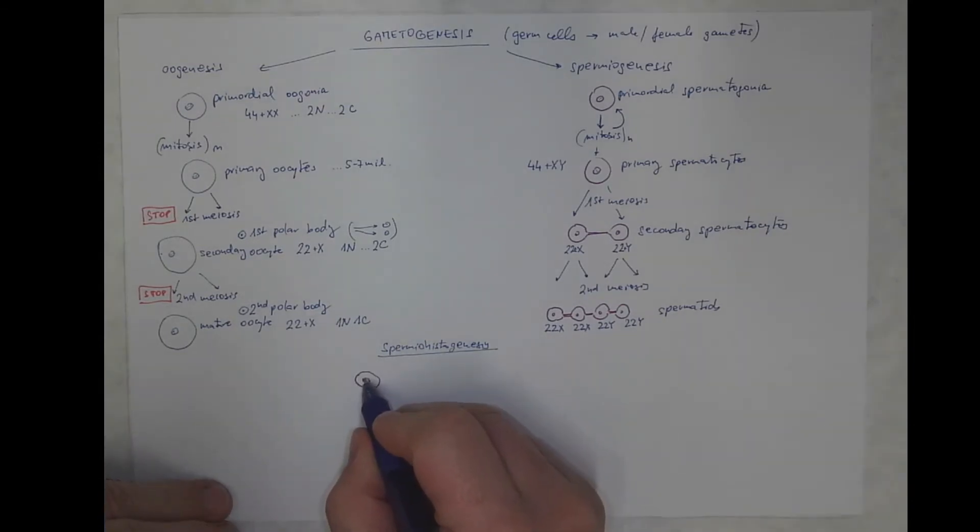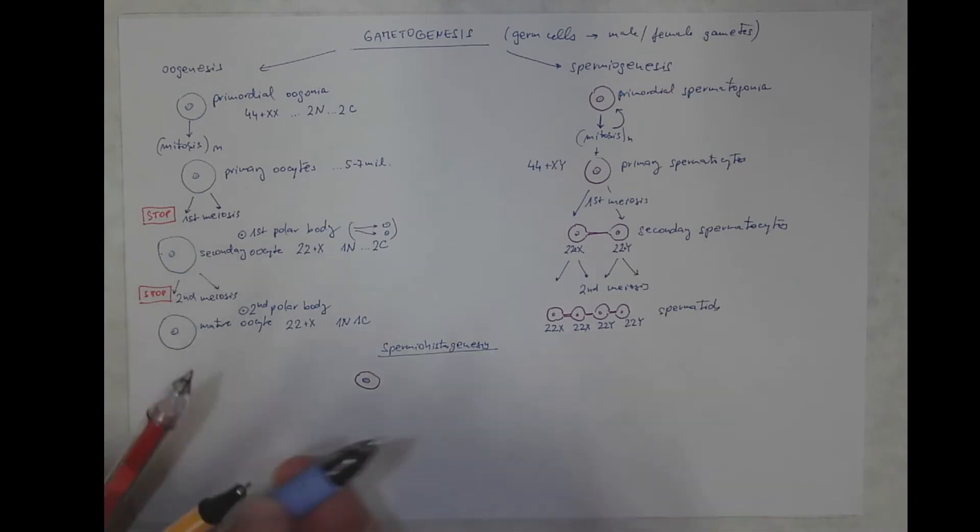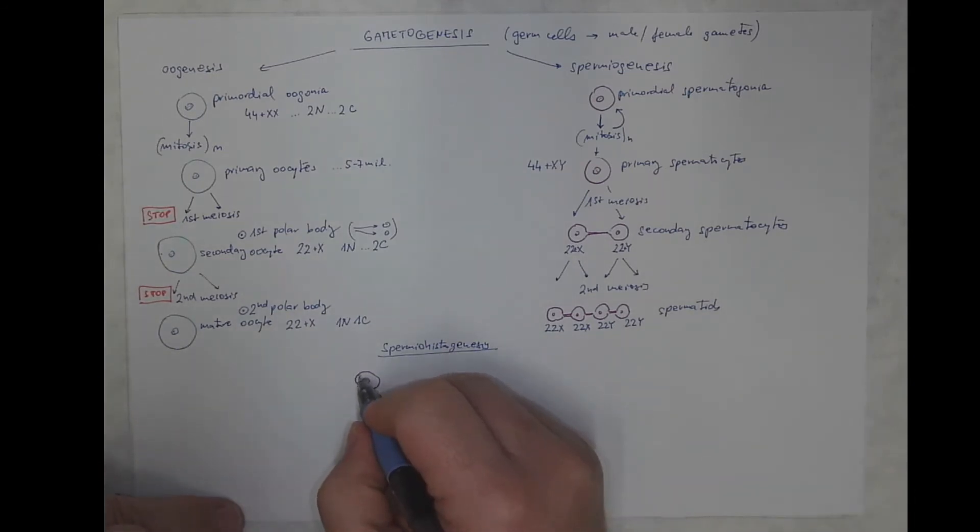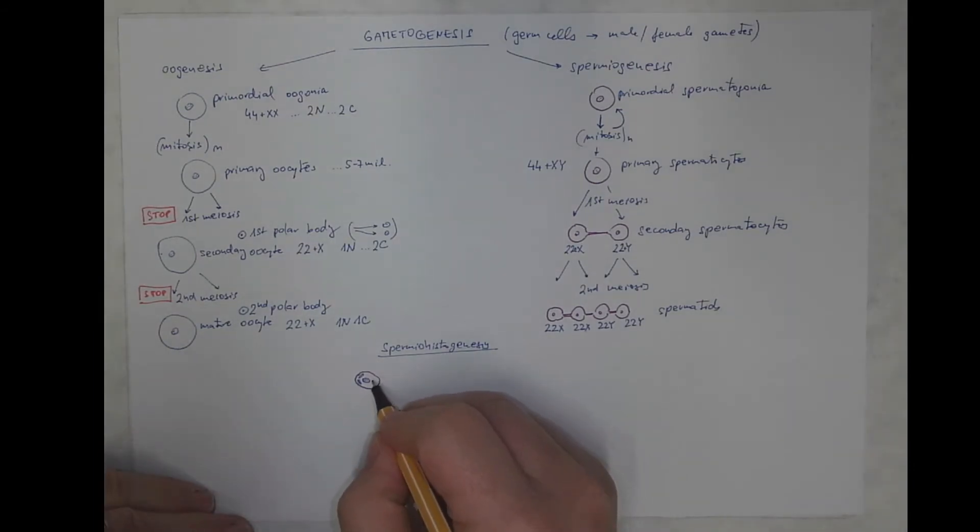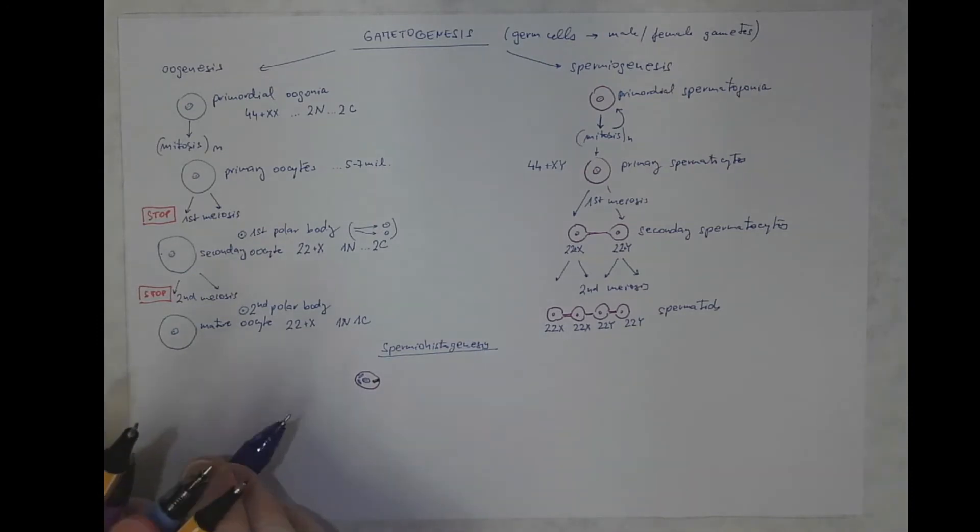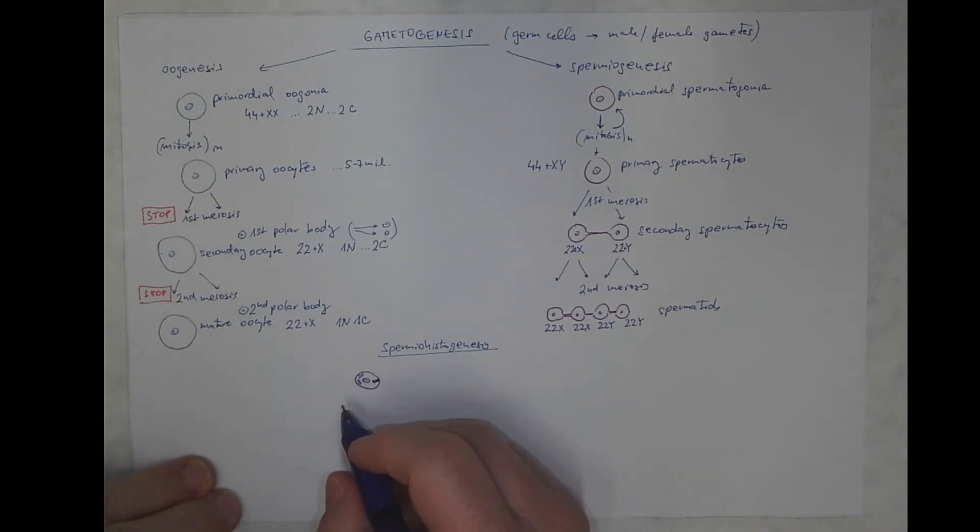with a nucleus, with regular organelles. I will mention the Golgi complex above all, and I will mention the centriole here. So, this is spermatid with nucleus, the Golgi complex and the centriole.